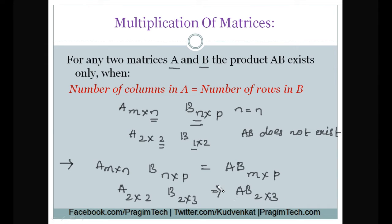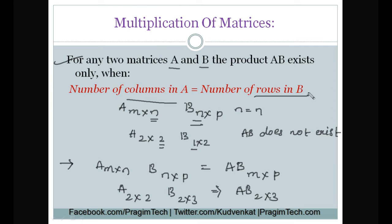These two points we have to remember while performing multiplication of matrices. The first and most important point is that multiplication between two matrices is possible only when the number of columns in A equals the number of rows in B.